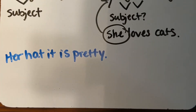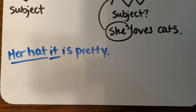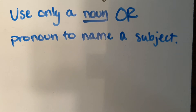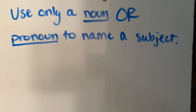What if we have the sentence 'Her hat, it is pretty'? What is wrong with this sentence? Both 'her hat' and 'it' are trying to be the subject, but we can only have one subject. So we can either say 'Her hat is pretty' or 'It is pretty.' We have to use only a noun or pronoun to name a subject — never both.